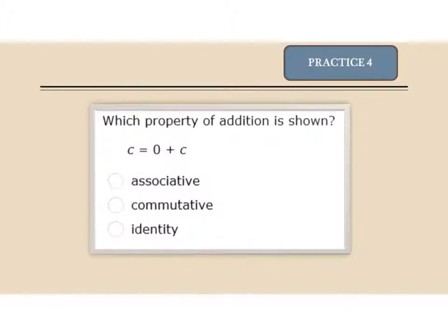Practice problem 4. Which property of addition is shown? I'm adding 0 to C and coming up with C. That is the identity property.